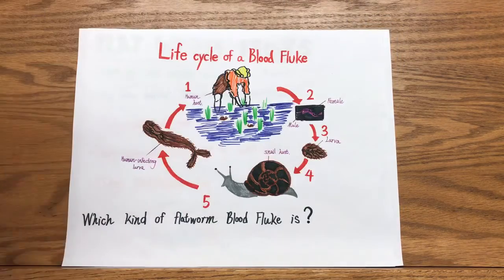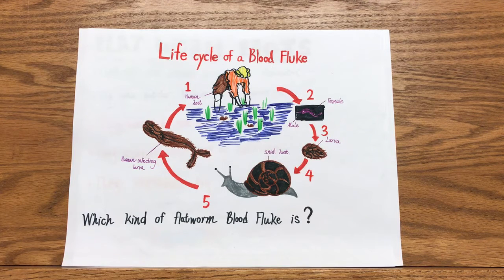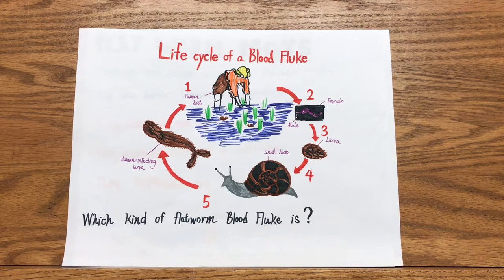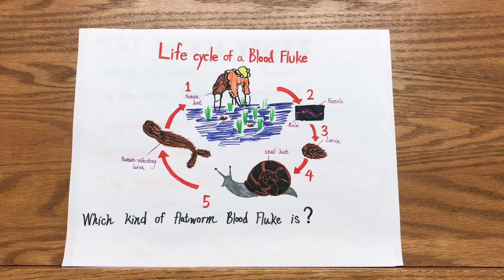Most flukes have a complex life cycle. The life cycle of a blood fluke is: first, the fluke larvae infect a human and mature in the intestines. The flukes reproduce sexually and the fertilized eggs exit the human host in feces. The eggs hatch in water. Some larvae infect snails. Larvae reproduce asexually in snails, and the offspring can infect humans.